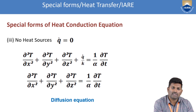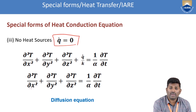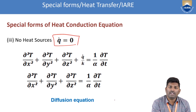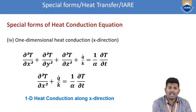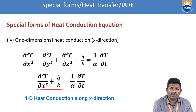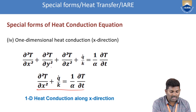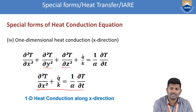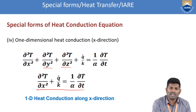The next special form is no heat source, meaning q-dot = 0. Substituting q-dot/k = 0 in the general heat conduction equation gives: ∂²T/∂x² + ∂²T/∂y² + ∂²T/∂z² = (1/α) ∂T/∂t. This equation is called the diffusion equation. The last special form is the one-dimensional heat conduction equation: if you consider only the x direction, you get ∂²T/∂x² + q-dot/k = (1/α) ∂T/∂t, with y and z direction terms equal to zero.